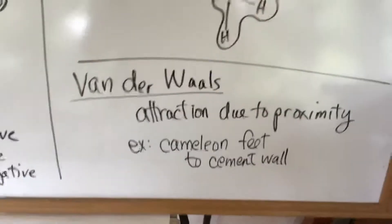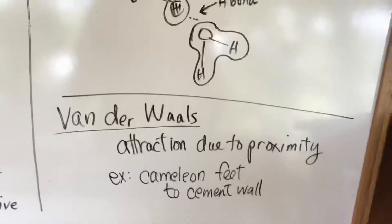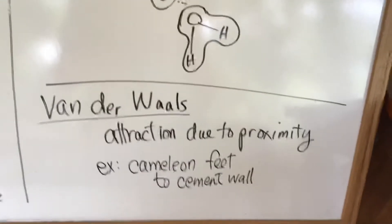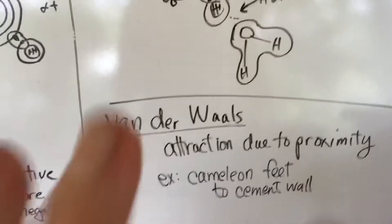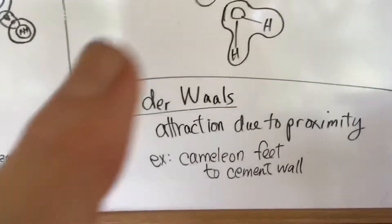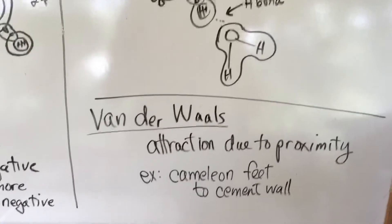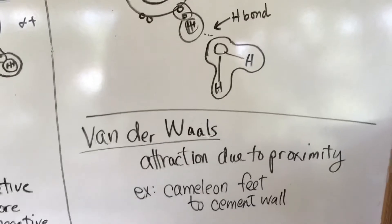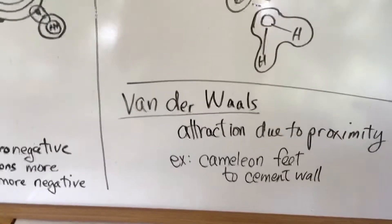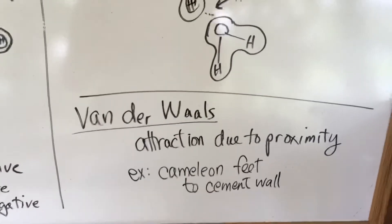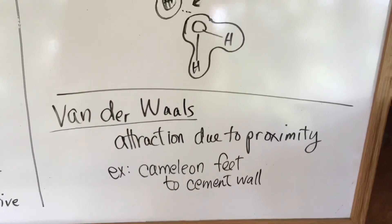The last type of bonding is called Van der Waals forces. We're not really going to talk about this very much, but I just wanted to mention it. It's an attraction due to proximity. Chameleon feet, attraction for the walls, it's just like an instantaneous attraction. When the foot comes in contact with the wall, it allows them to move up the wall, but it can break easily. There's no measurable force, so to speak. There's no charges involved, or at least not easily measured.